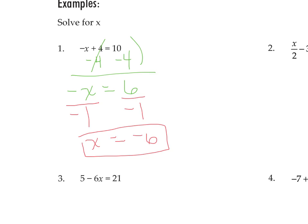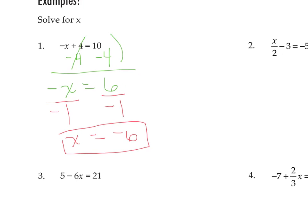To check x equals negative 6, take that negative 6 and substitute it into the original equation. Be careful — the x itself has a negative on it, and there's also the negative sign outside, so you'll end up with two negatives when you check.